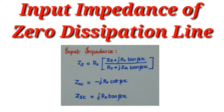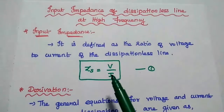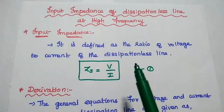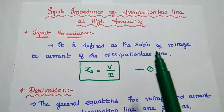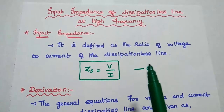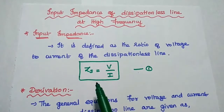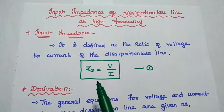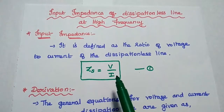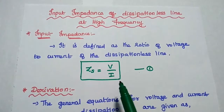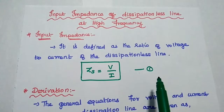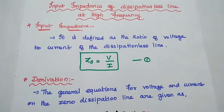Dear students, now we are going to discuss input impedance of zero dissipation line in detail. Input impedance is defined as the ratio of voltage to current of the dissipationless line. It is represented as Zs, that is equal to V by I. Consider this as the first equation.